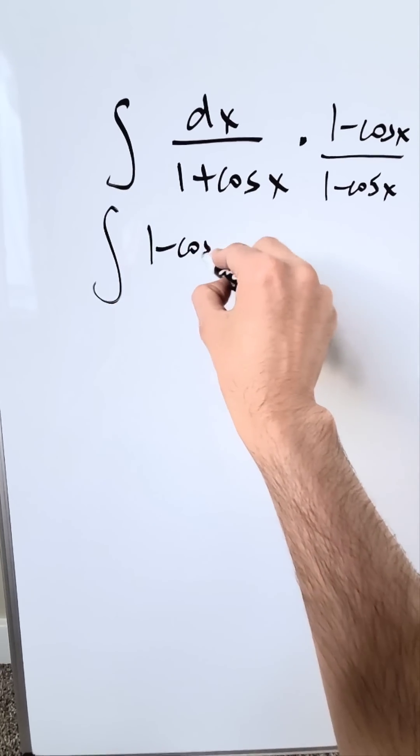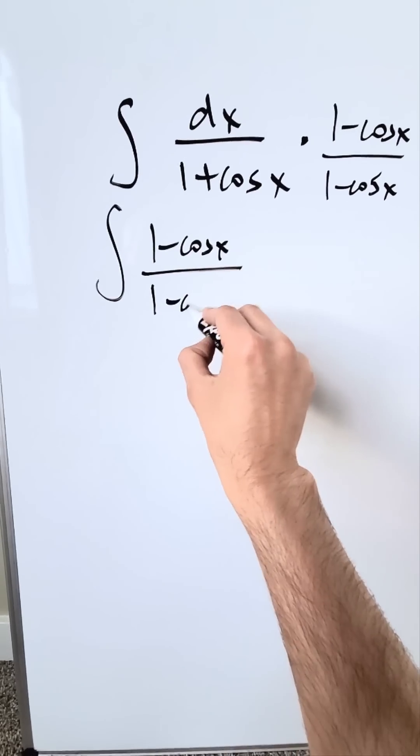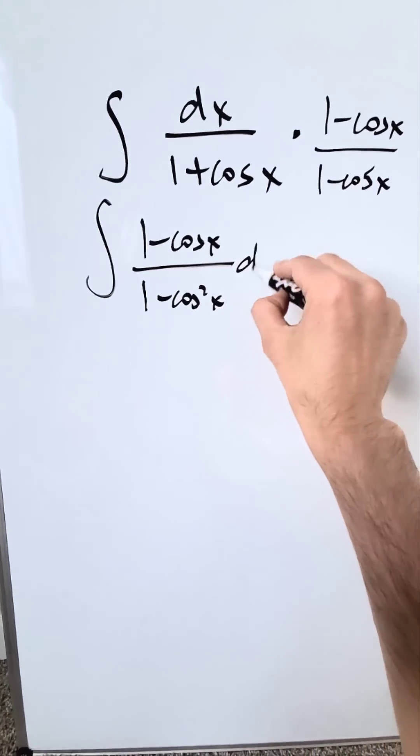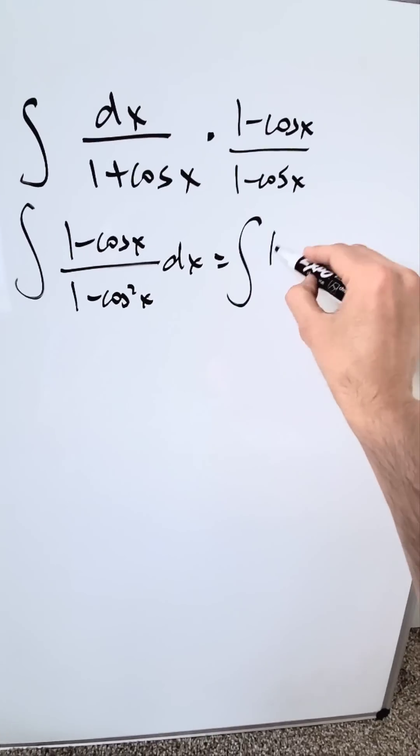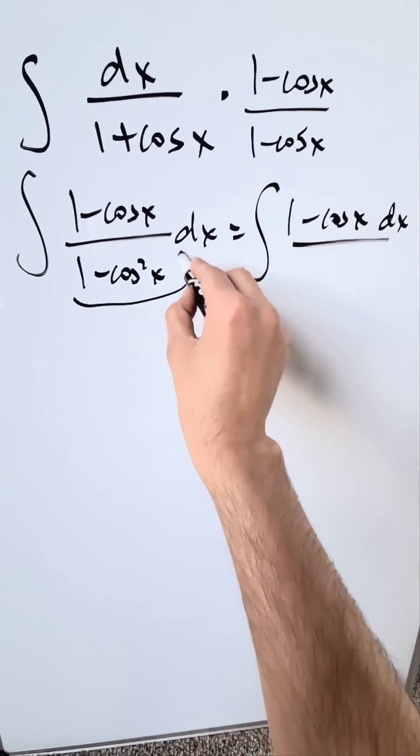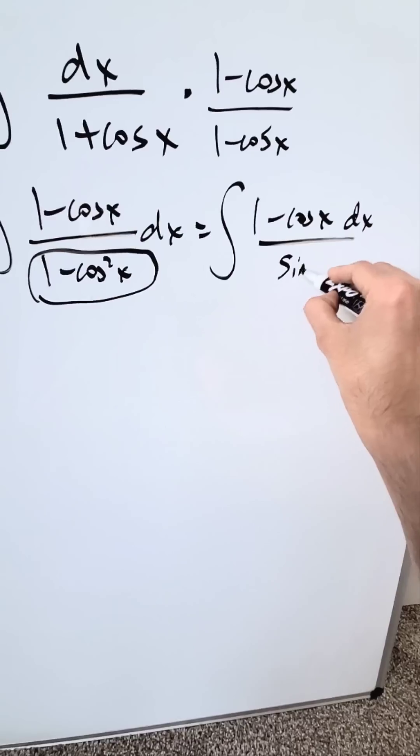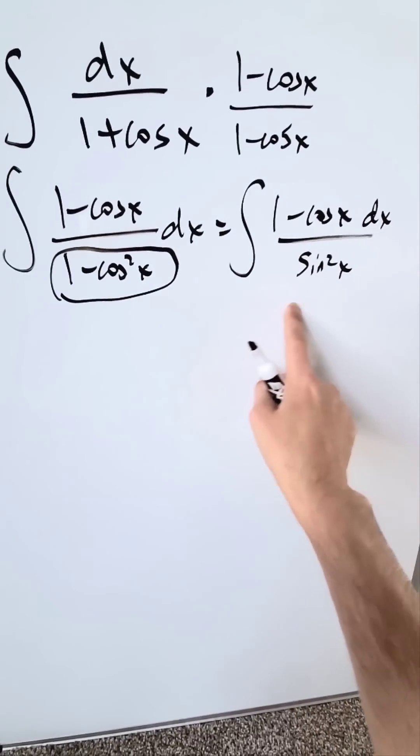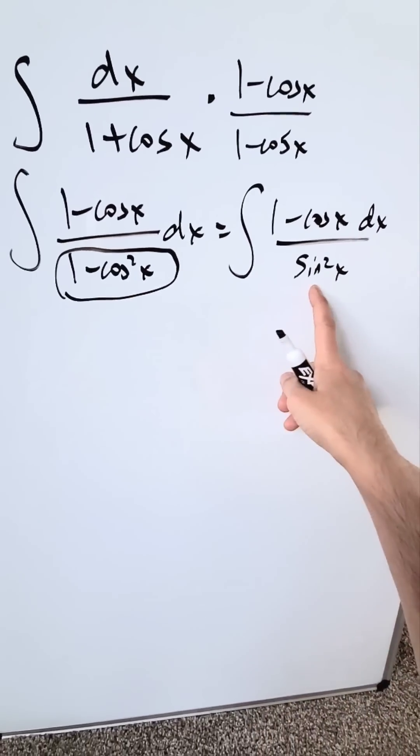And you're looking at 1 minus cosine x divided by 1 minus cosine square x dx. When you simplify this, what do you have? You have 1 minus cosine x in the numerator. Here in the denominator, you're going to get sine square x. You're looking at your basic trigonometric identity shuffling around and this is what you have.